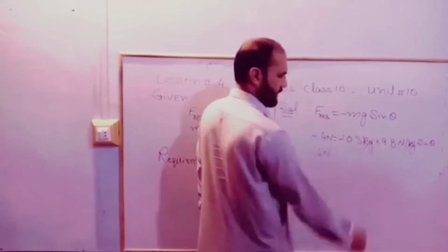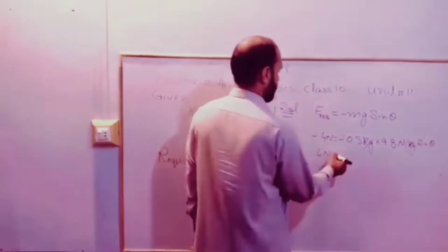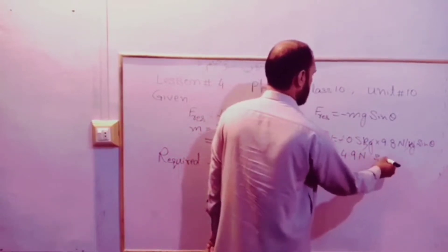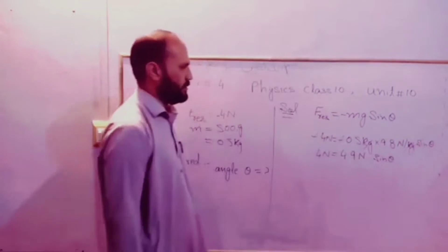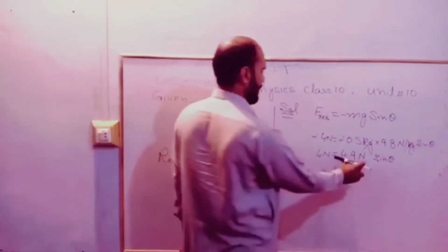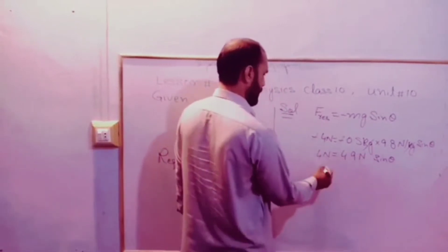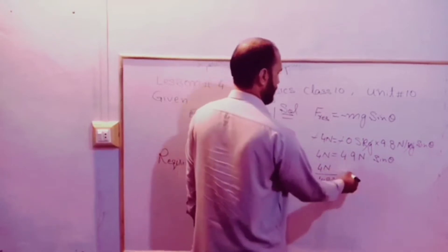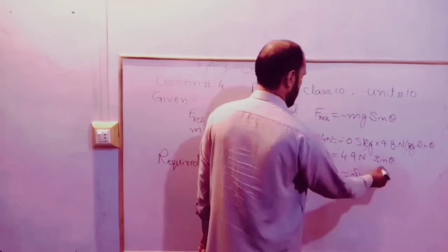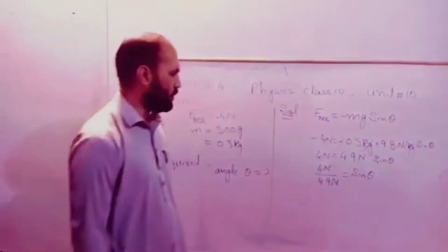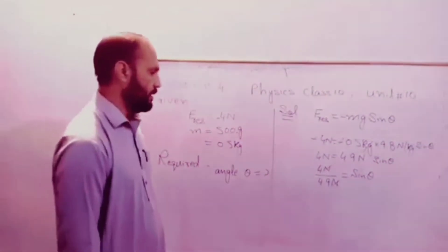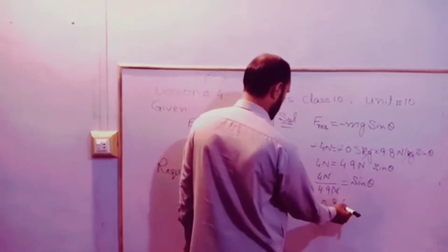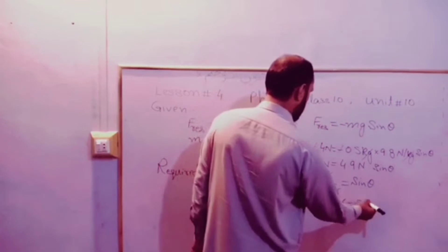0.5 multiplied by 9.8 gives 4.9 N, so the equation becomes 4.9 N into sin theta. Dividing both sides by 4.9 N gives sin theta equals 4 divided by 4.9.